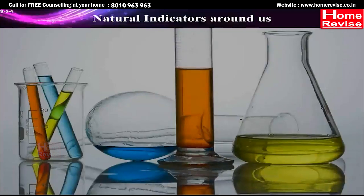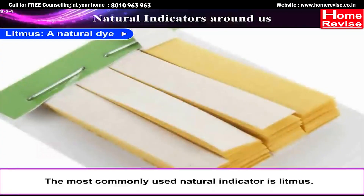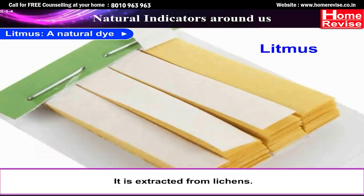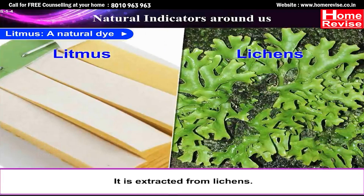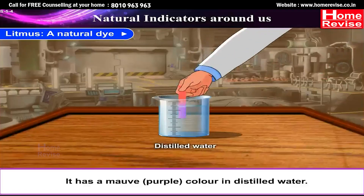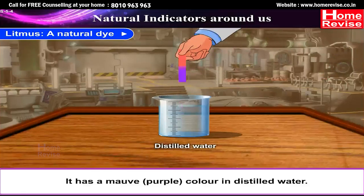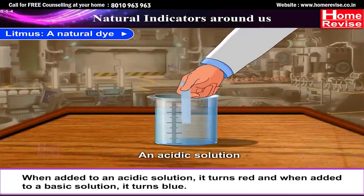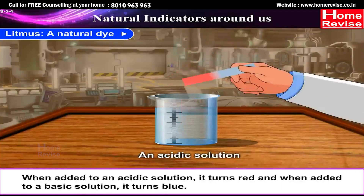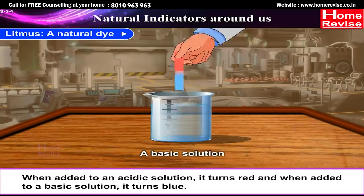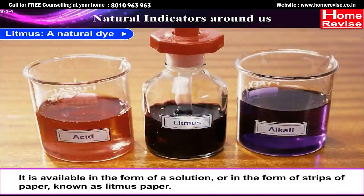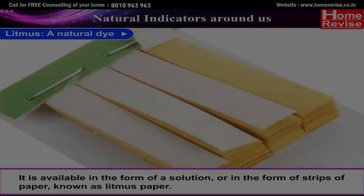Natural indicators around us. The most commonly used natural indicator is litmus — a natural dye. It is extracted from lichens and has a mauve (purple) color in distilled water. When added to an acidic solution it turns red, and when added to a basic solution it turns blue. It is available in the form of a solution or in the form of strips.